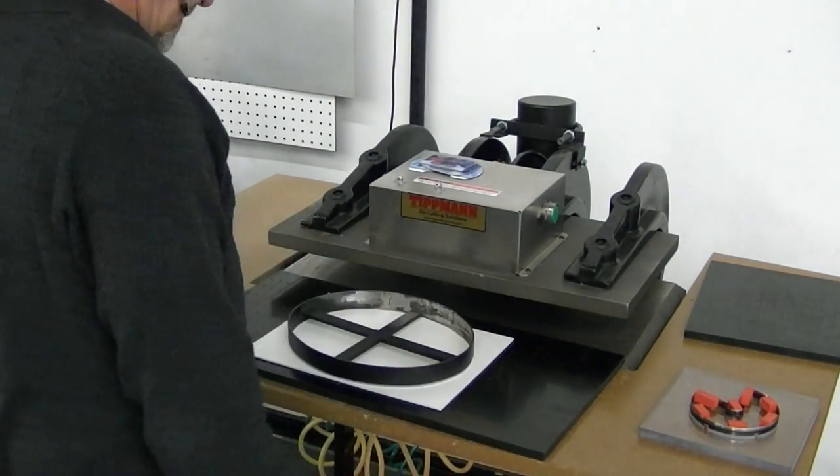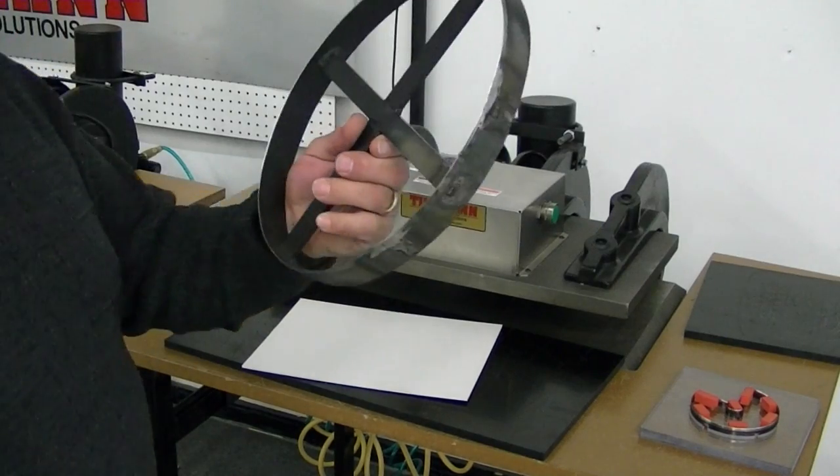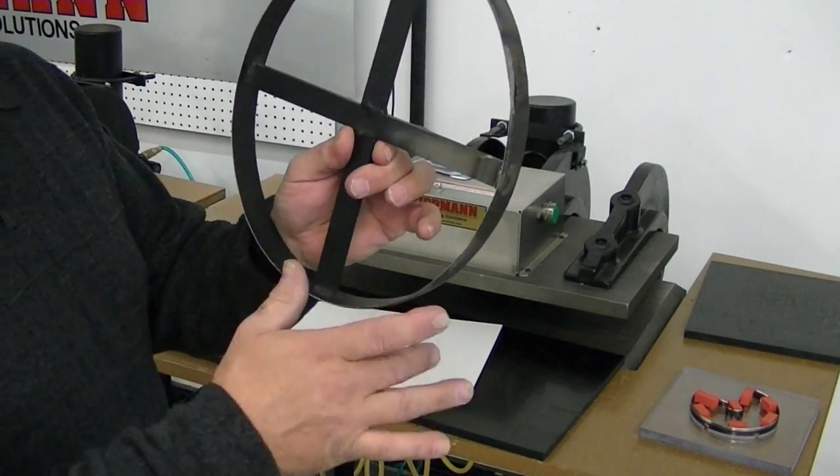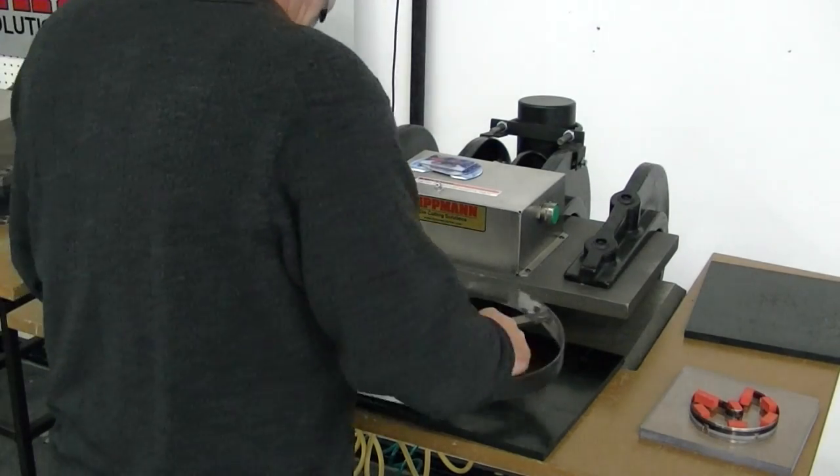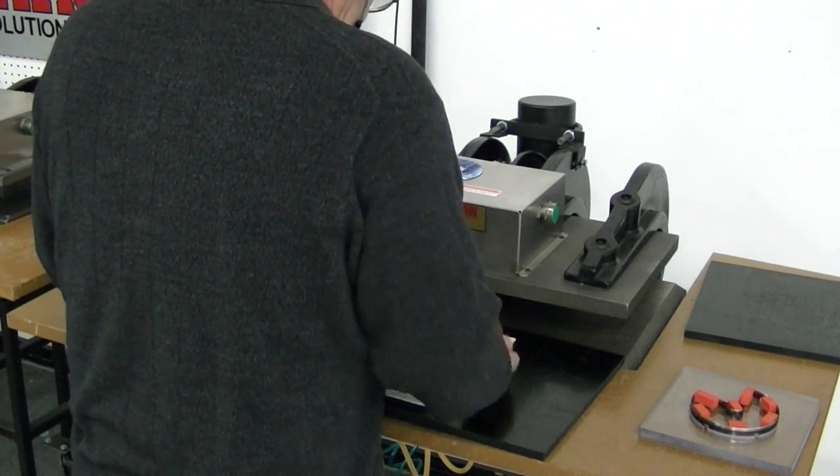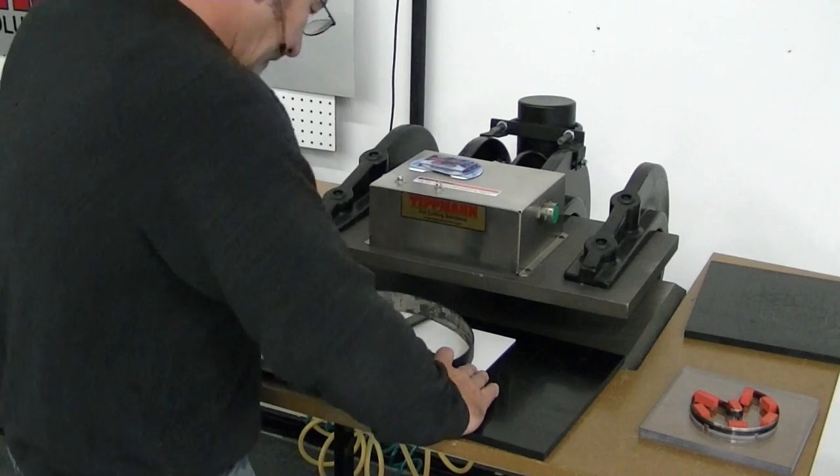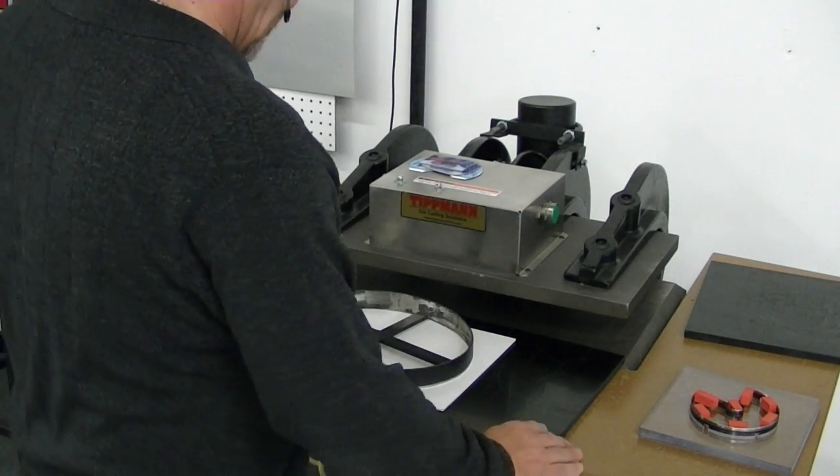I'm going to go ahead and cut out an oval. This is not an actual circle, it's more of an oval, it's about 10 inches. I know you want to do 10-inch circles, but I don't have a 10-inch circle die to demonstrate with, so I'm going to use the oval here.